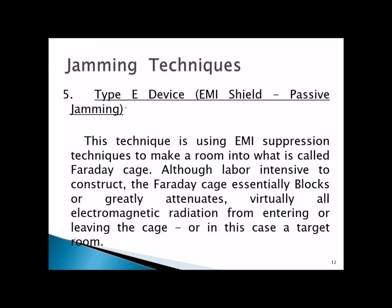The Type E device uses EMI suppression technique to make what is called a Faraday cage. Although labor intensive to construct, the Faraday cage essentially blocks or greatly attenuates virtually all electromagnetic radiation, providing an electromagnetic interference shield that prevents radiation from entering or leaving the cage or target room.